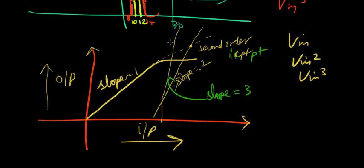I'm just wanting to save some time here. And here, the slope 3 line, because it's steeper, positive slope and steeper, intersects the same line at this point, which is slightly before the second order intercept point. And it's called the third order intercept point, ICPT point.